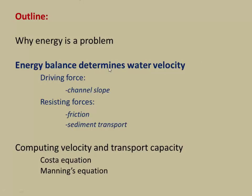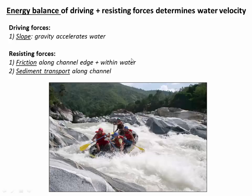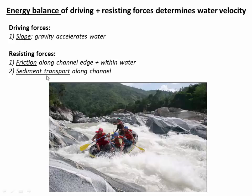So that brings us to the energy balance of rivers. When we think about energy balance, we think of it in terms of driving and resisting forces that combine to determine water velocity. On the driving side, we have the slope of the river accelerating the water downhill. On the resisting side, we have two main forces: friction, like water crashing along rocks, and sediment transport, which takes energy and acts to reduce the velocity of the water.